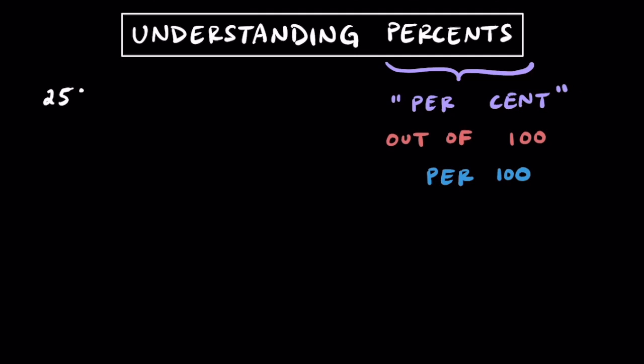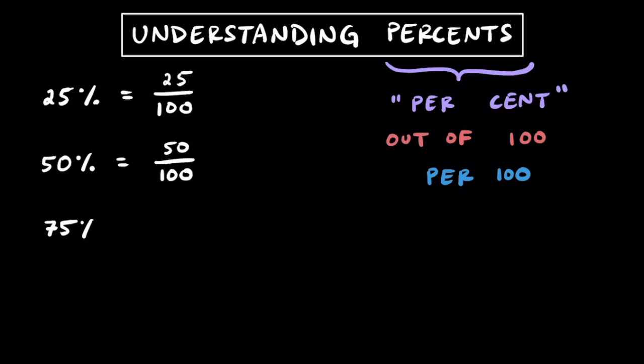Here are a few basic percentages. 25% is really a ratio of 25 per 100. 50% is really just a ratio of 50 for every 100. 75% is a ratio of 75 per 100, and 100% is a ratio of 100 per 100. Remember that when we're working with ratios, they can be simplified just like fractions, and we can use their GCF to do so.